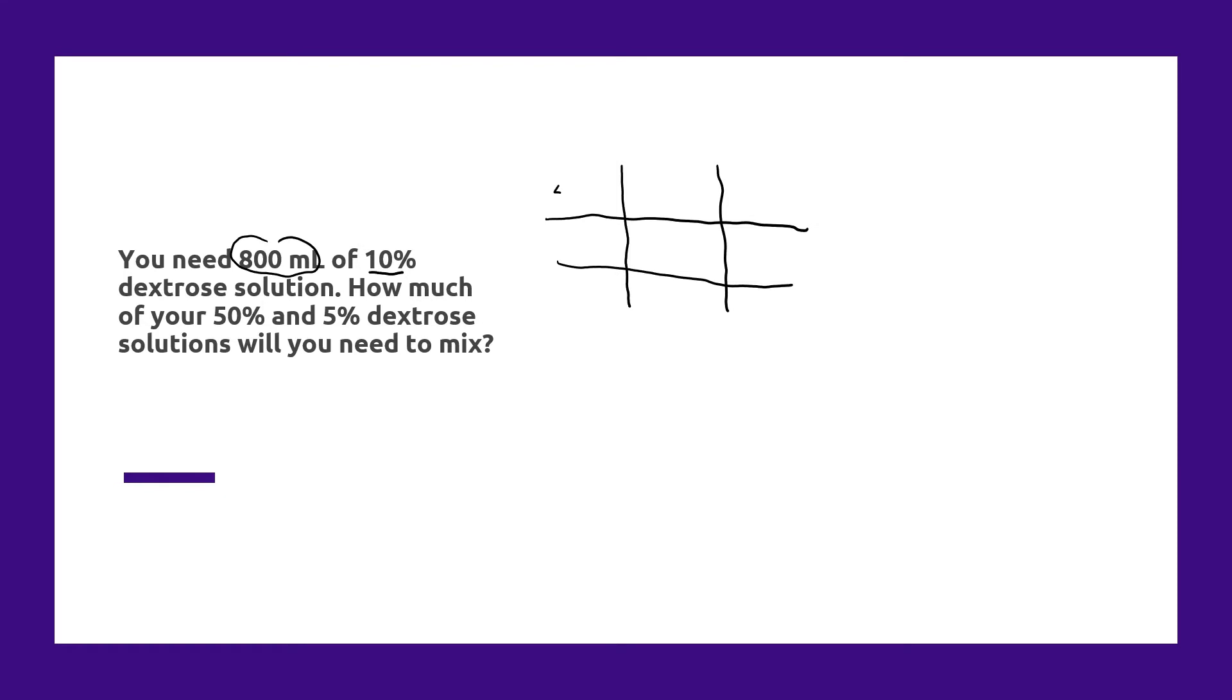We take our higher concentration and put it in the upper left, and we take our lower concentration that we have on hand and put it in the lower left. We put our target concentration here in the middle.